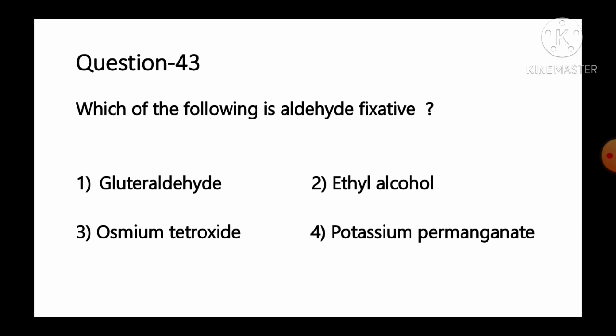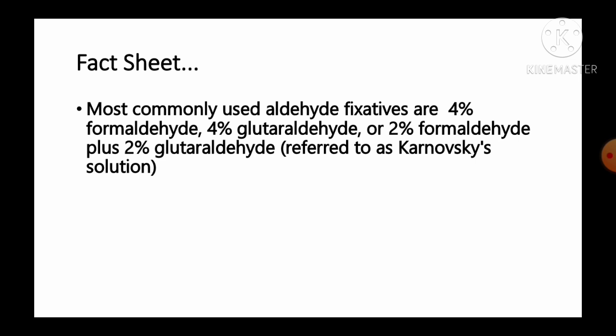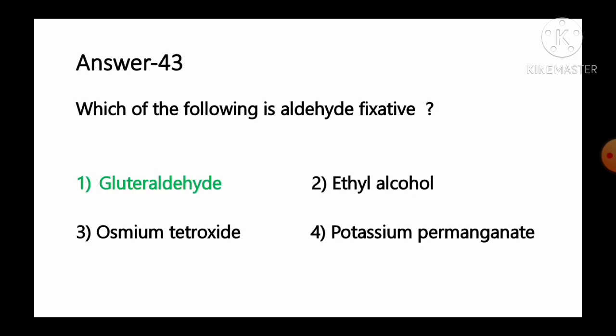Question number 43: Which of the following is an aldehyde fixative? Options: 1 glutaraldehyde, 2 ethyl alcohol, 3 osmium tetroxide, 4 potassium permanganate. The most commonly used aldehyde fixatives are 4% formaldehyde, 4% glutaraldehyde, or a mixture of 2% formaldehyde plus 2% glutaraldehyde, also referred to as Karnovsky's solution. So option number 1, glutaraldehyde, is the correct answer.